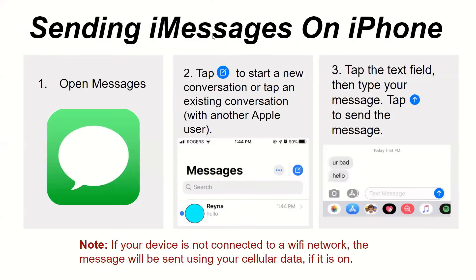Sending iMessages on iPhone. Open Messages and tap this icon to start a new conversation, or tap an existing conversation with another Apple user. Then tap the text field and type your message, then tap the send (arrow) icon to send. If your device is not connected to a Wi-Fi network, the message will be sent using your cellular data if it is on.